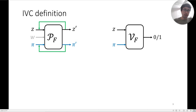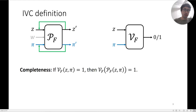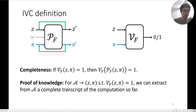The prover can be looped back into itself, and this is formalized by the completeness condition: if the verifier accepts a state-proof pair, then when you apply the prover one step, the verifier also accepts this new z', π'. The soundness or proof-of-knowledge property states that for every adversary that produces a final state-proof pair accepted by the verifier, we can extract a complete transcript of the computation going all the way back to z0.